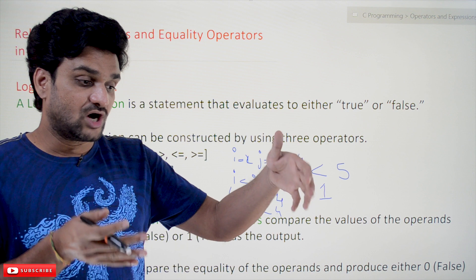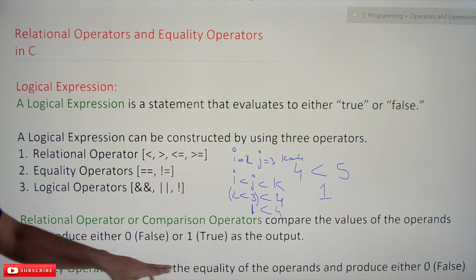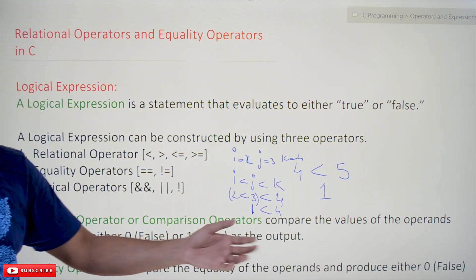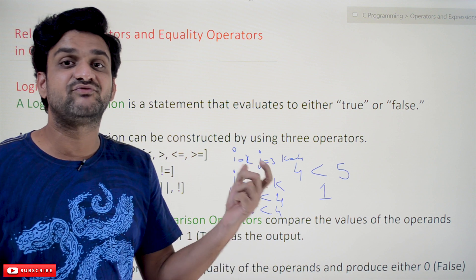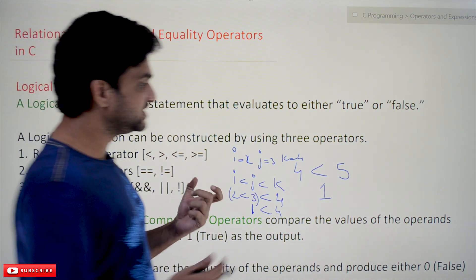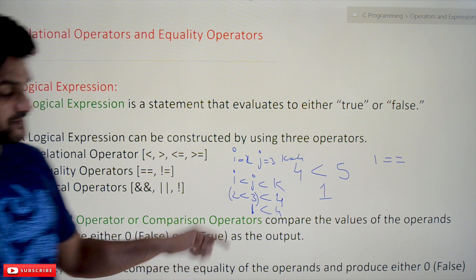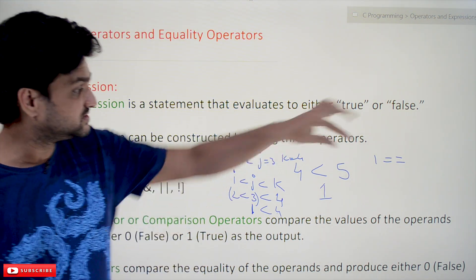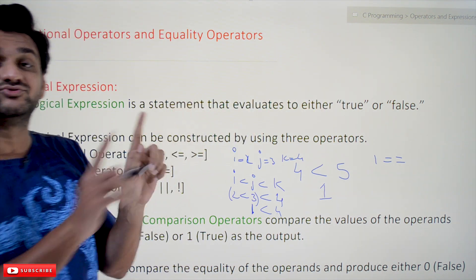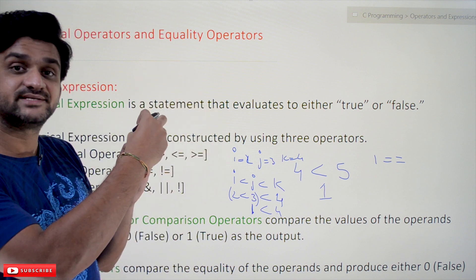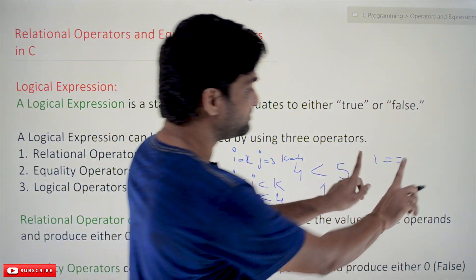The next type is equality operators. Equality operators compare the equality of the operands and produce an output of 0 or 1. Relational operators find the relation between operands, whereas equality operators find equality. The symbol for equality comparison is two equal-to signs (==), because a single equal-to sign (=) is used for assignment.